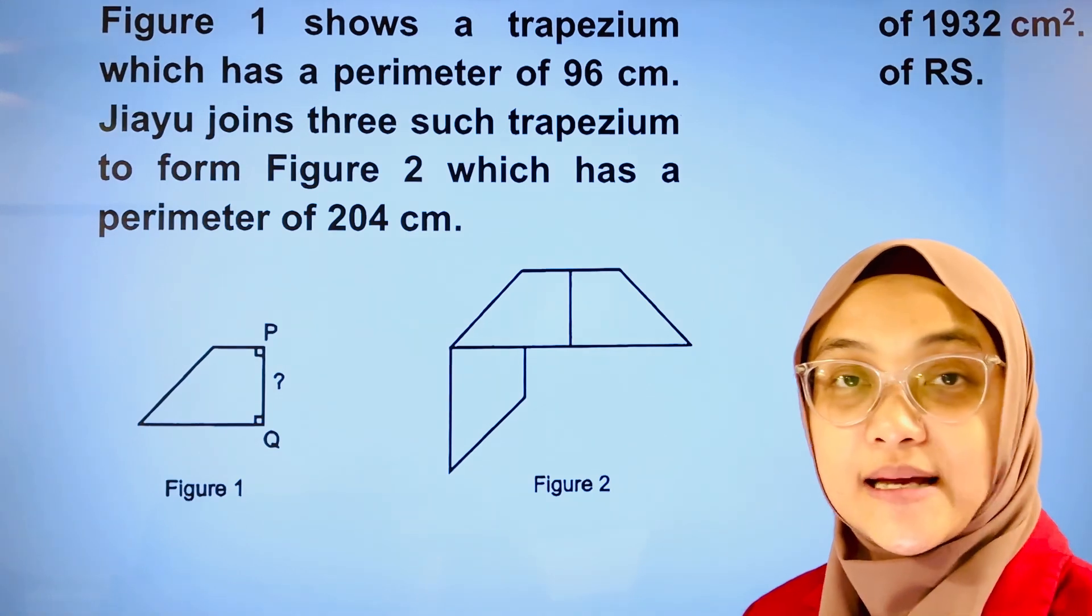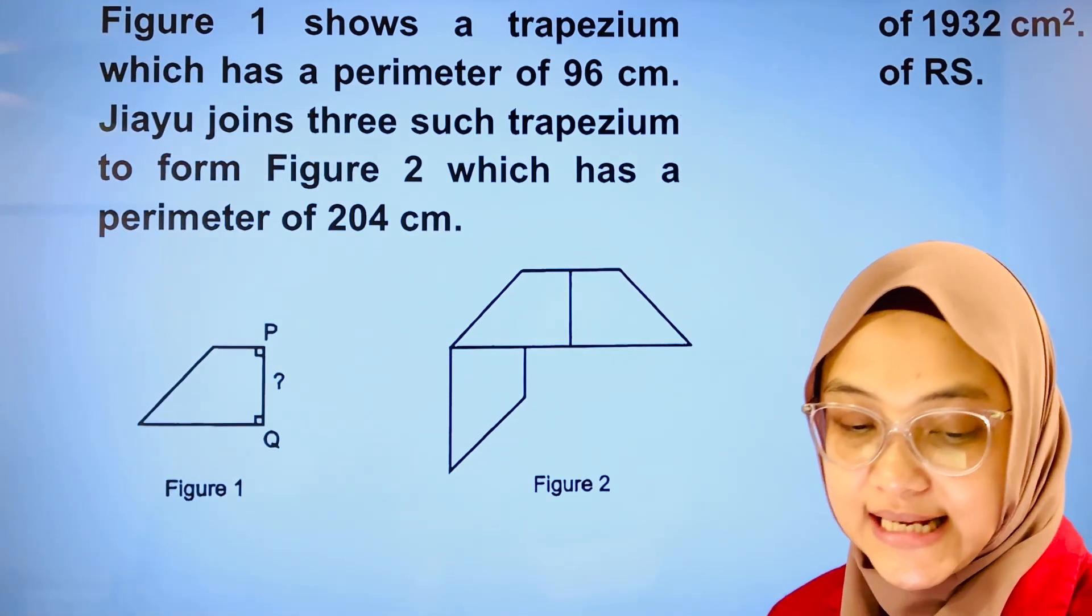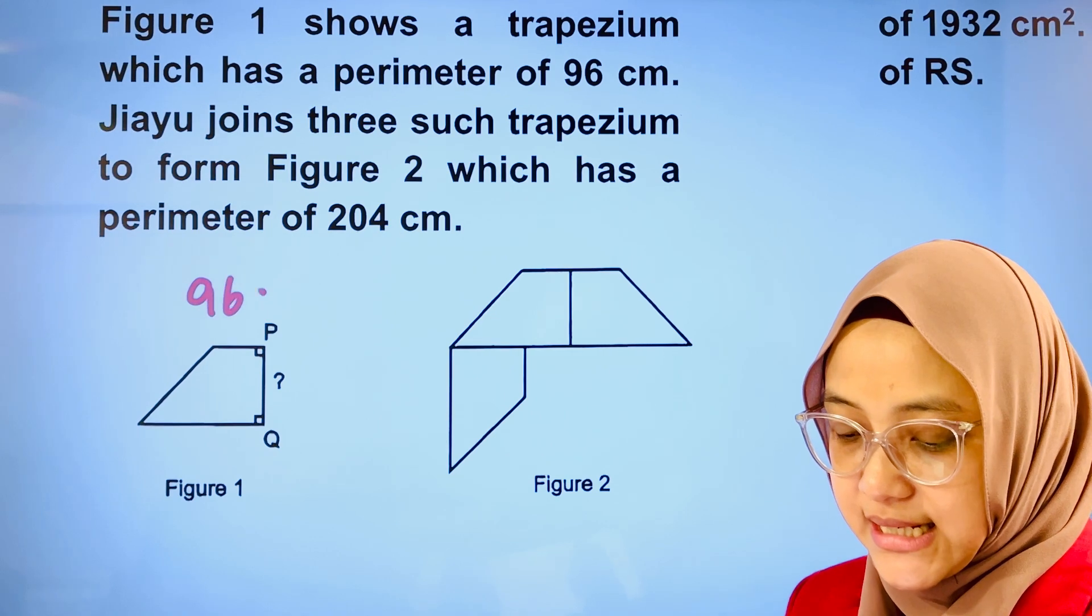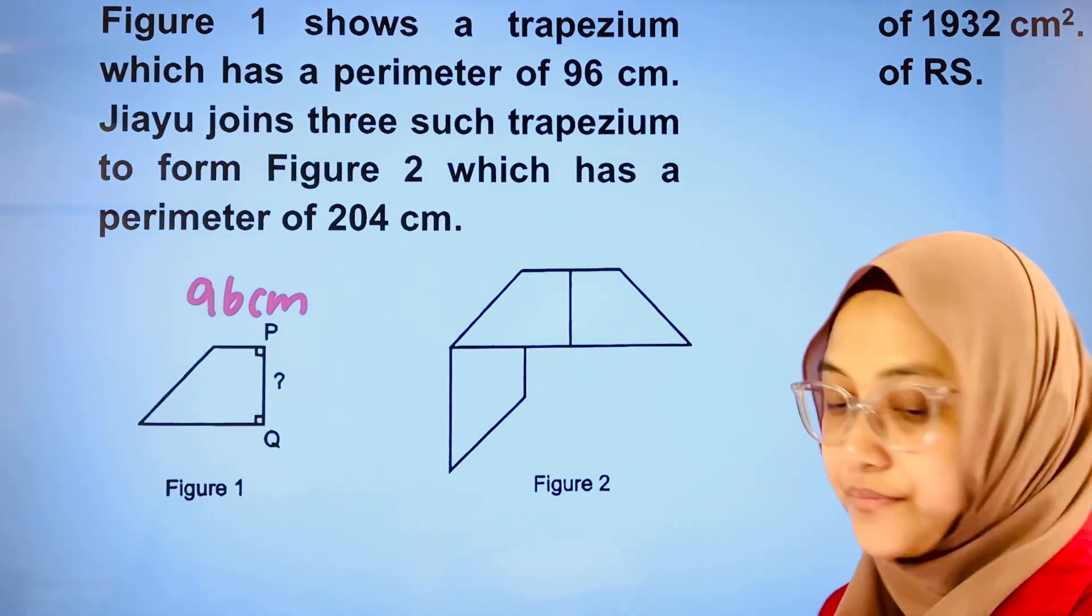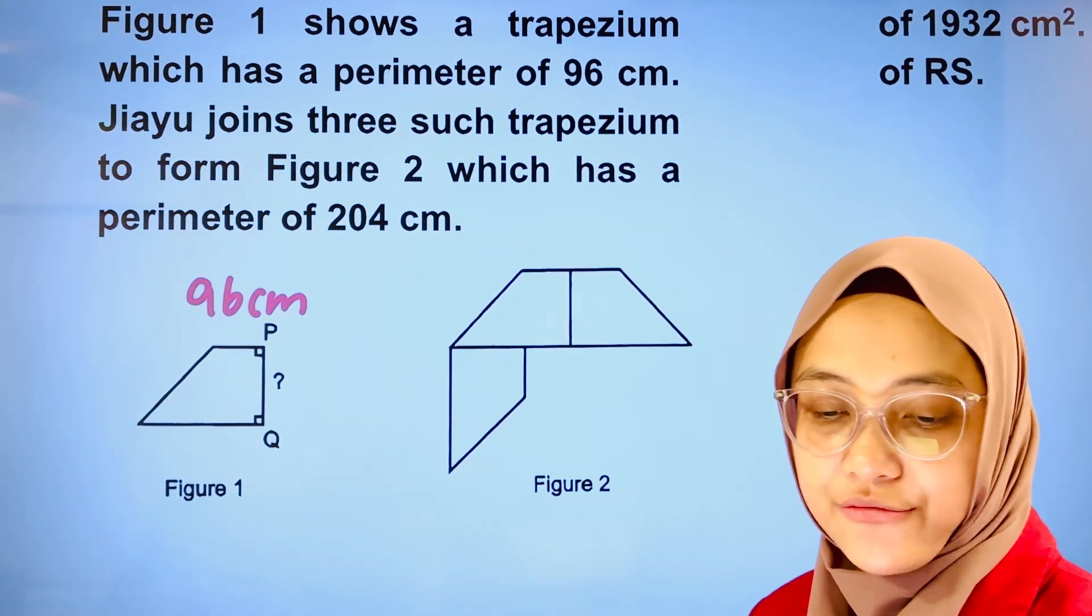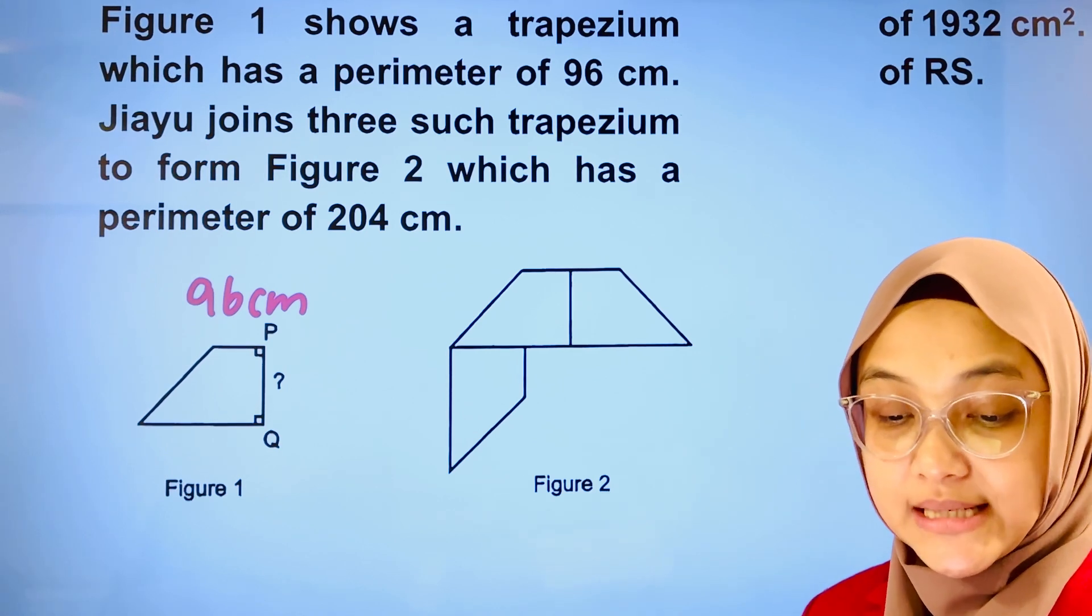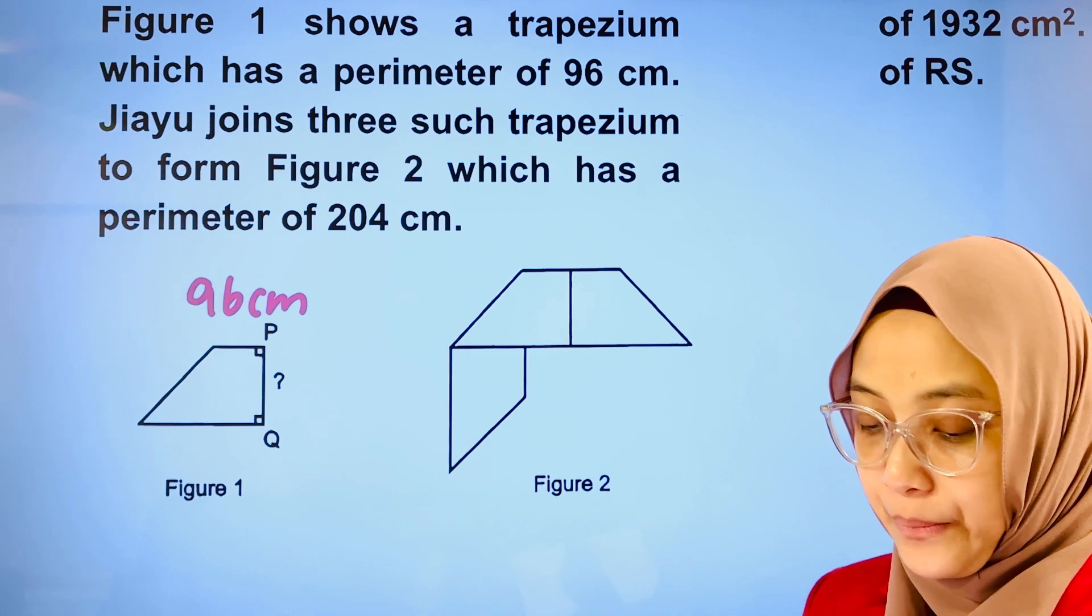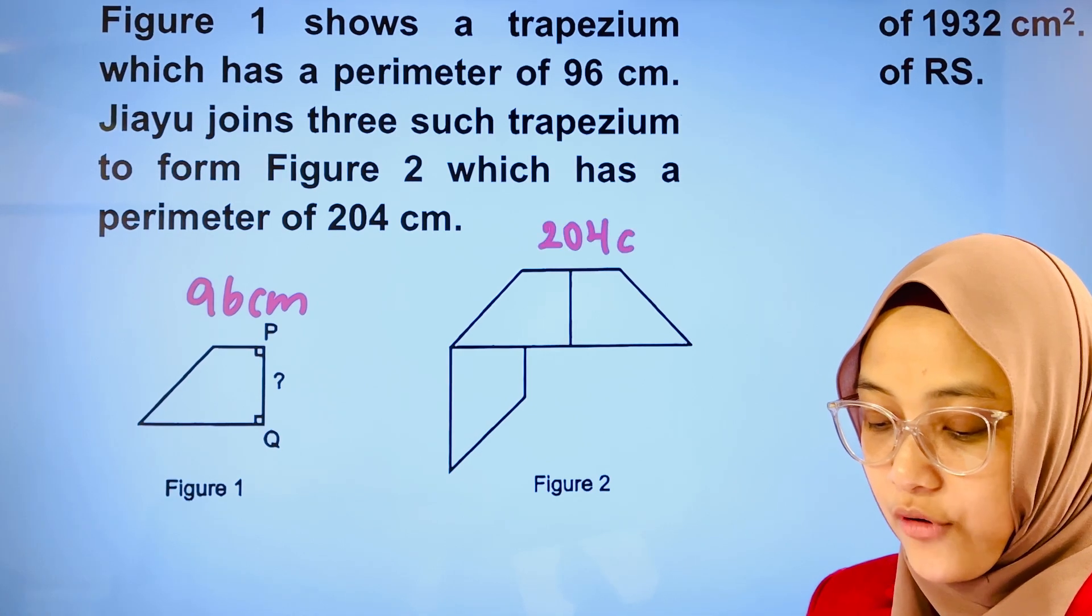Figure 1 shows a trapezium which has a perimeter of 96 cm. This is figure 1 here, the perimeter is 96 cm. Jiayu joins three such trapeziums to form figure 2 which has a perimeter of 204 cm. Figure 2 has a perimeter of 204 cm.